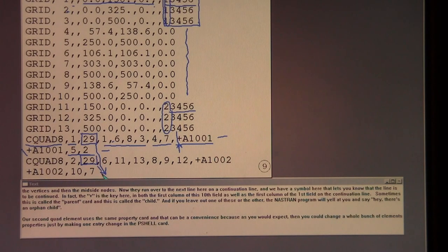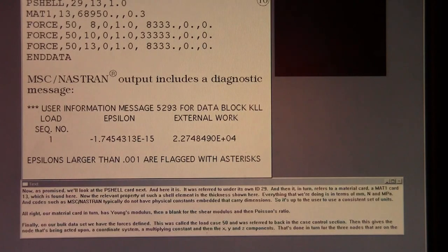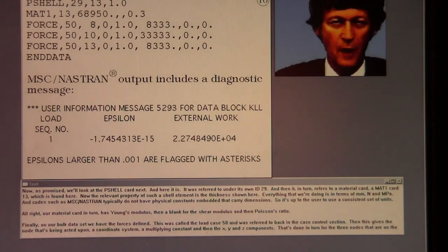The second quad element uses the same property card, and that can be a convenience because, as you would expect, then you could change a whole bunch of elements' properties just by making one entry change in the P shell card.